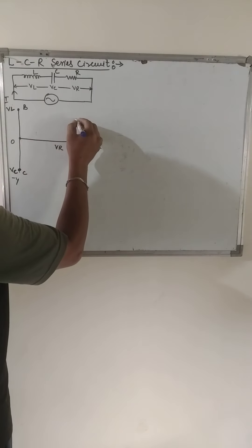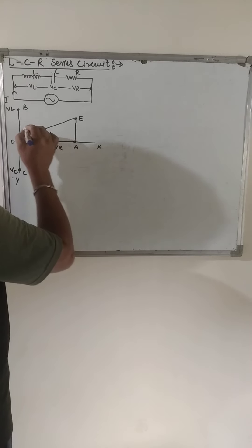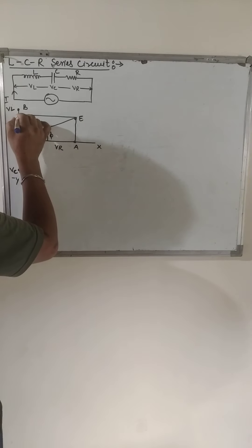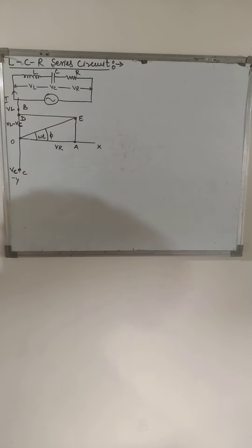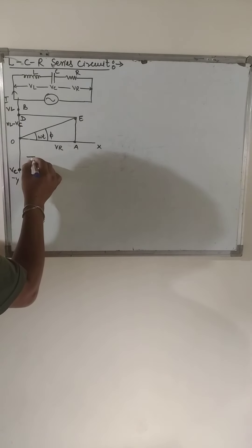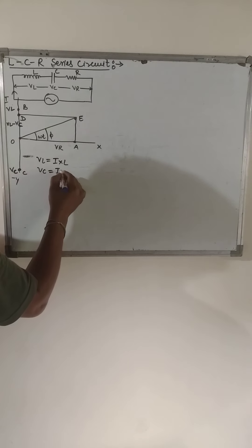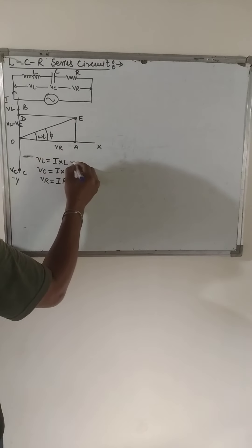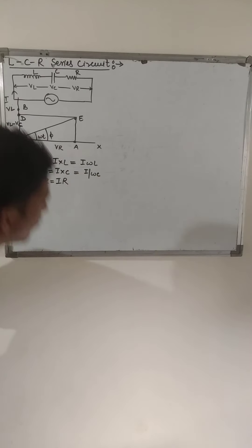A perpendicular is drawn and the point is named E, with angle ωt and phase angle φ marked. Point D represents (V_L − V_C) on the y-axis, since V_L is in positive y direction and V_C is in negative y direction. We note: V_L = IXL, V_C = IXC, and V_R = IR. Also XL = ωL and XC = 1/(ωC). Now taking triangle OAE, we apply the Pythagorean theorem.